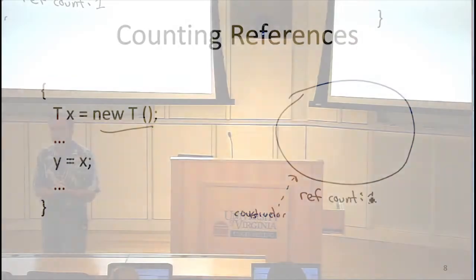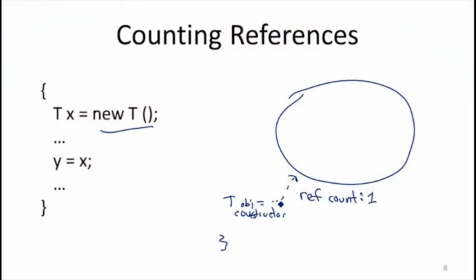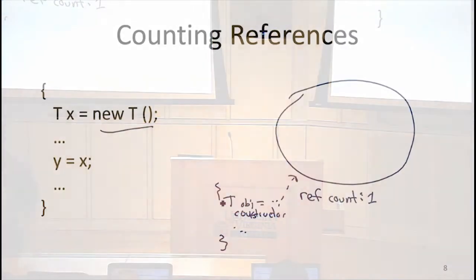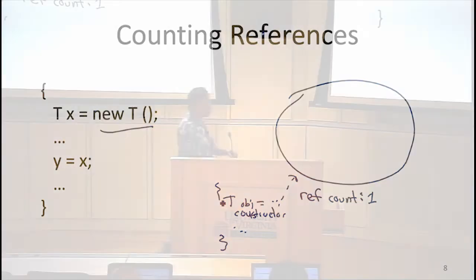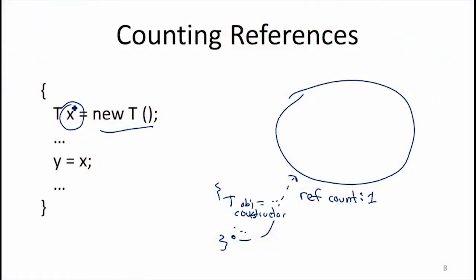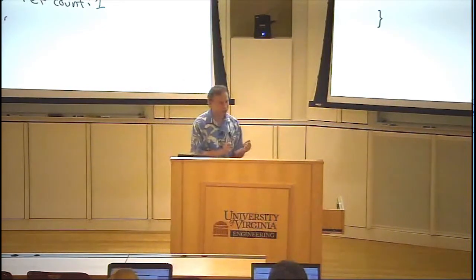If there was some time between those two events when the reference count was zero, that object would be reclaimed before we actually assign it to the local variable. So we need to make sure the reference count doesn't hit zero when an object is being transferred — either passed as a parameter or returned as a result. That reference is being exchanged; it should never go to zero. Then when we do an assignment, that increases the reference count, because now y is also a reference to the same object.